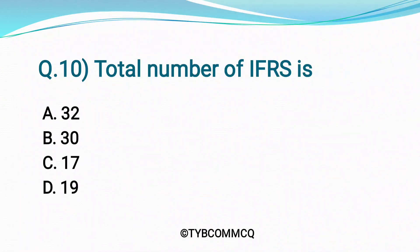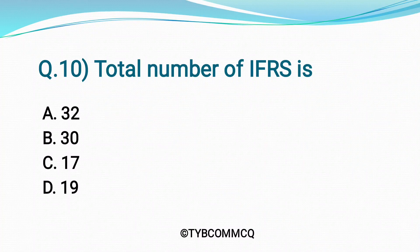Question 10: Total number of IFRS is — Option A: 32, Option B: 30, Option C: 17, Option D: 19. Yes, Option C — 17 — is the correct answer.